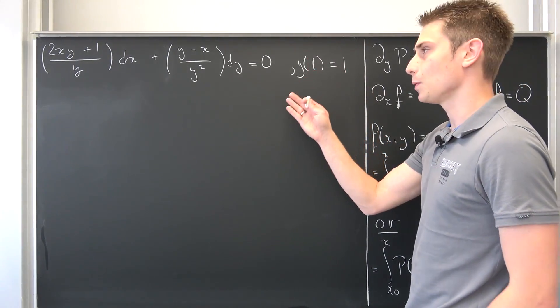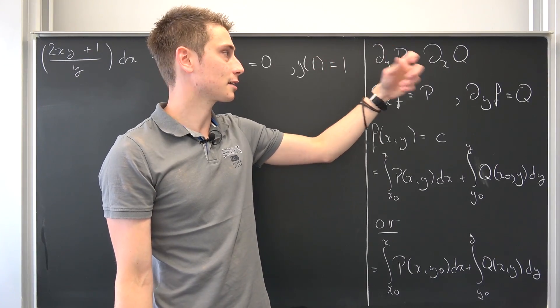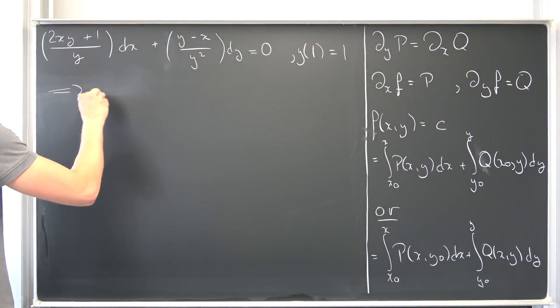Once again, initial value problem. We have this thing right here, and as always we have to check if this thing right here is indeed exact using this little relationship right here.